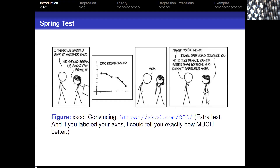How many of you have read xkcd? In one strip a character says 'I think we should break up and I can prove it.' The reply: 'I knew data would convince you. No, I think I can do better than someone who doesn't label her axes.' The hover comment adds: 'And if you label your axes I could tell you just how much better.' You don't want to give information in a way that's not helpful.